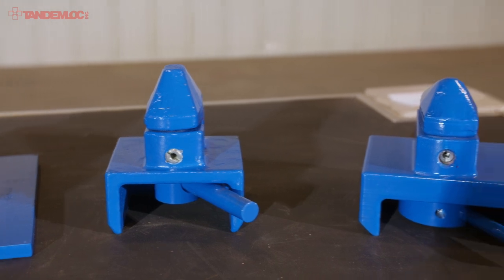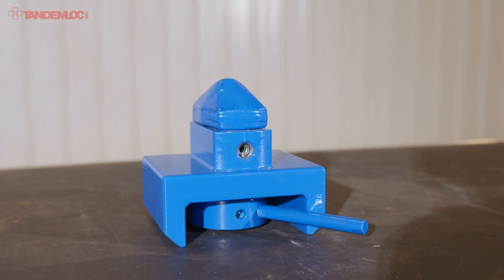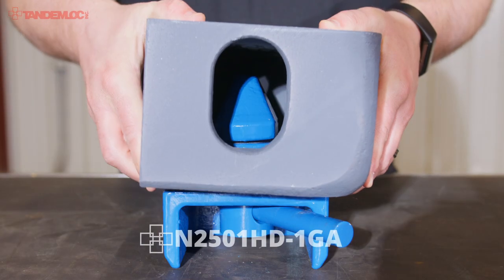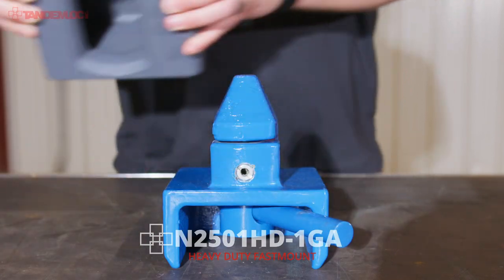There are specialized applications where more strength is required. To facilitate customers in those scenarios, Tantamok offers the heavy duty fast mount. Like our standard models, the heavy duty fast mount has the same form, fit, and function, but with higher strength ratings.